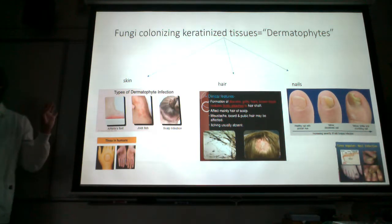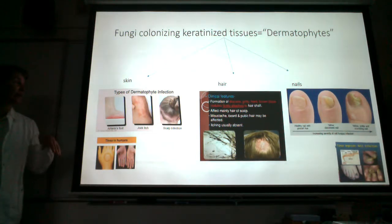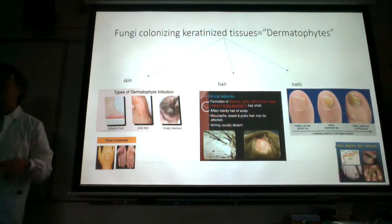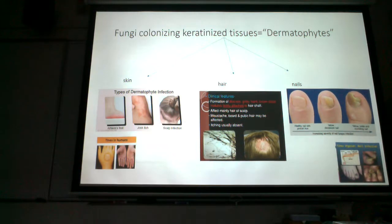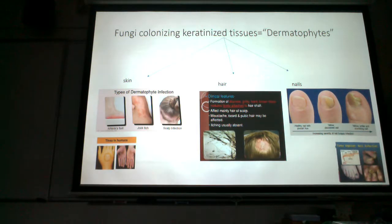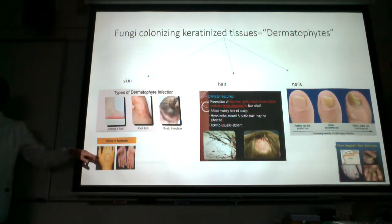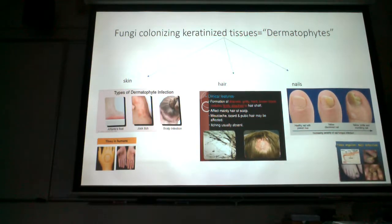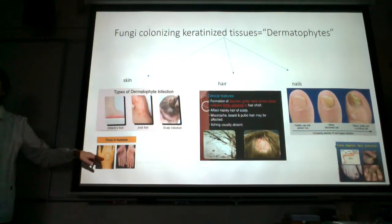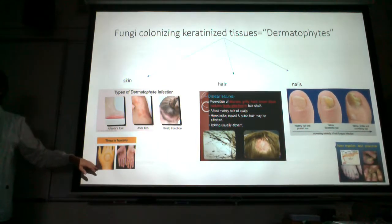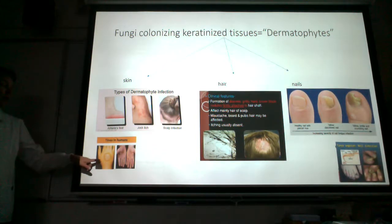Common names for dermatophyte infections include athlete's foot on the foot, jock itch in the groin, and scalp infections where the dermatophytes grow in your hair, weakening the hair shaft so it falls out — causing alopecia, which is a common sign of dermatophyte infection. Historically, skin infections were called ringworm because the ring of inflammation grows outward as the fungi grow outward, making people think a worm was causing it. When you hear ringworm, the pathogen is a dermatophyte fungus — so you use an antifungal, not an anti-helminthic.